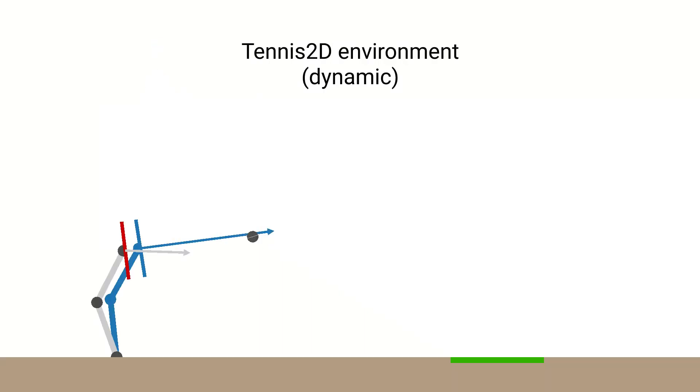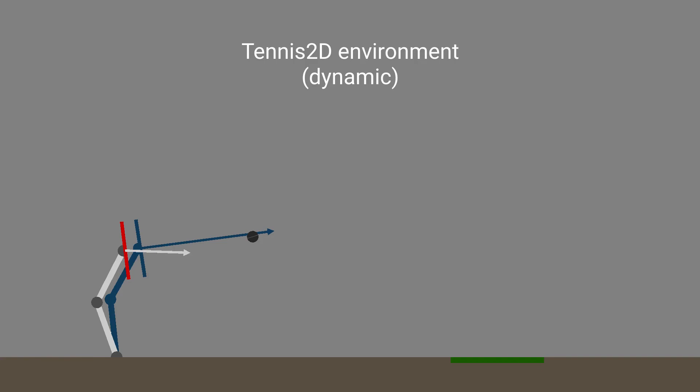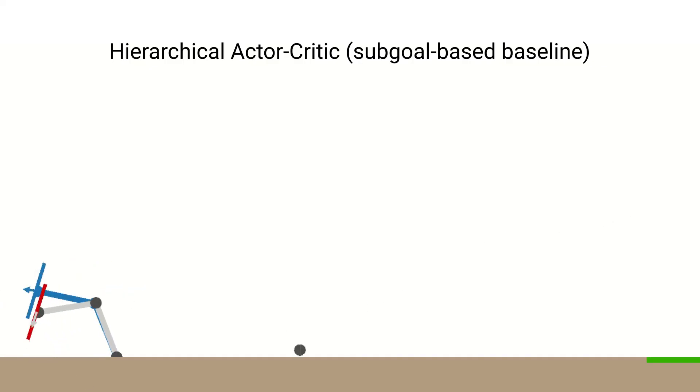In a tennis 2D environment, the agent controls a robot arm with a racket as an end effector. Subgoals and the time remaining until the next timed subgoal is to be achieved are shown in blue. The environment requires the agent to return a tennis ball to a varying target area on the ground.